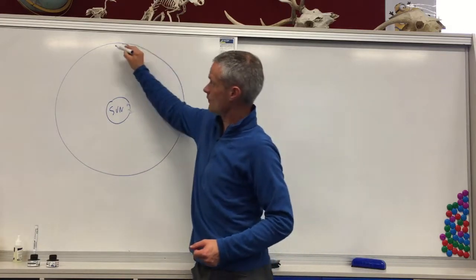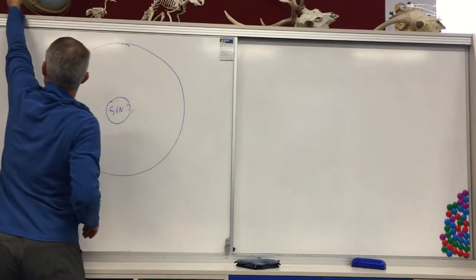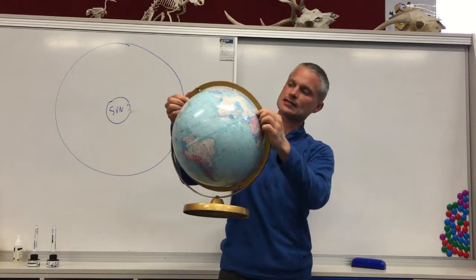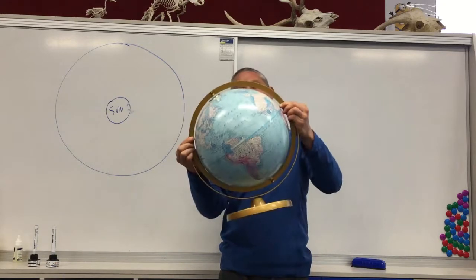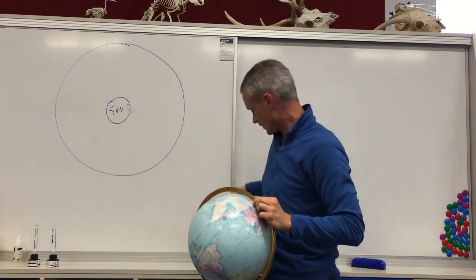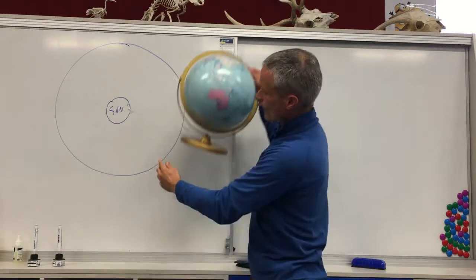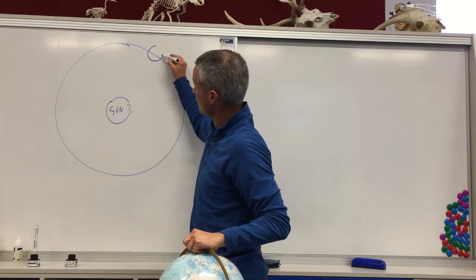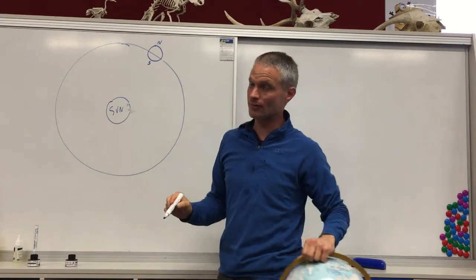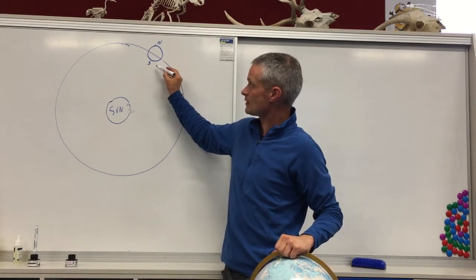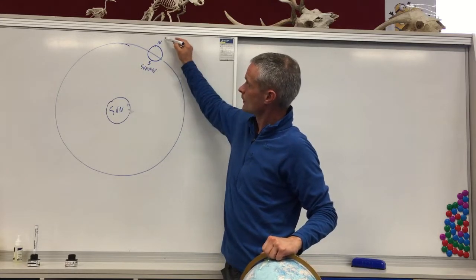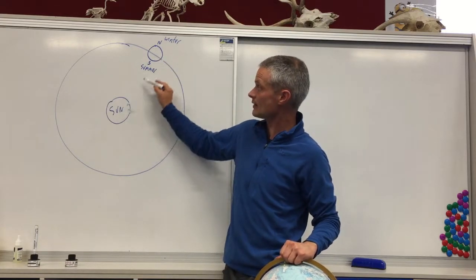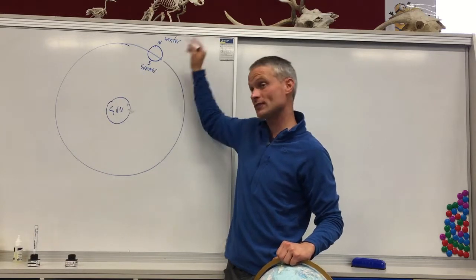Looking at the orbit of our earth around the sun: the earth spins on a 23-degree tilt, so it's not straight up and down but twisted 23 degrees as it spins. That means different parts of the earth face towards the sun at different times of year. In the summer of the southern hemisphere, the southern hemisphere points towards the sun while the northern hemisphere points away, experiencing winter.